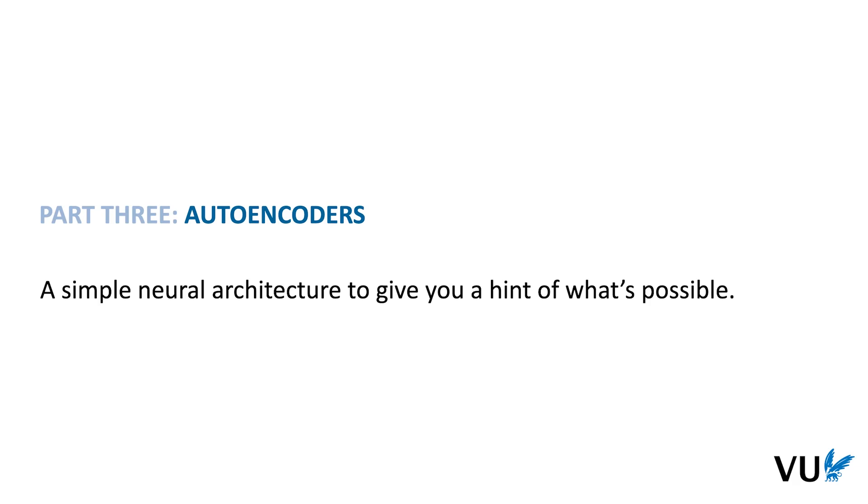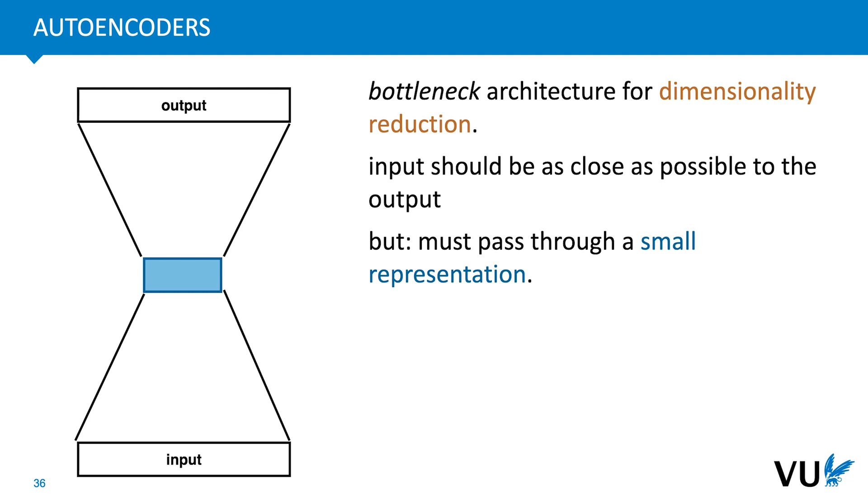So, we've seen what neural networks are and how to use them for regression and classification. But the real power of neural networks is not in doing classical machine learning tasks. Rather, it's in their flexibility to grow beyond that. The idea is that neural networks can be set up in a wild variety of different configurations to solve all sorts of different tasks. To give you a hint of that, we'll finish up by looking at a simple example: the autoencoder.